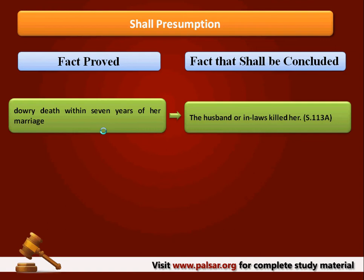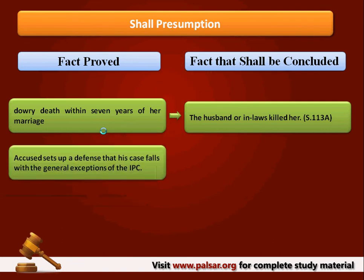Under Shall Presumption, whenever the act provides that the court shall presume a particular fact basing on proof of some other fact, the court has no choice except to presume that fact. An example is Section 113. Another example: an accused charged with an offense says his case falls within the ambit of general exceptions — like unsound mind, intoxication, insanity, or minority. In such a case, the court shall presume the non-existence of such circumstances, and the burden rests upon the accused to show that his case is covered by the general exception. If he fails, he will face sentence.